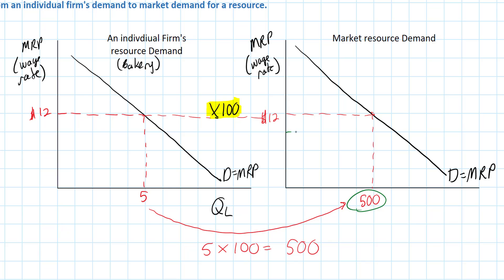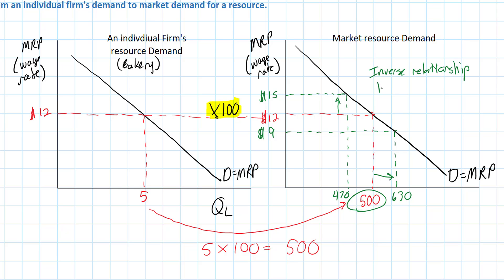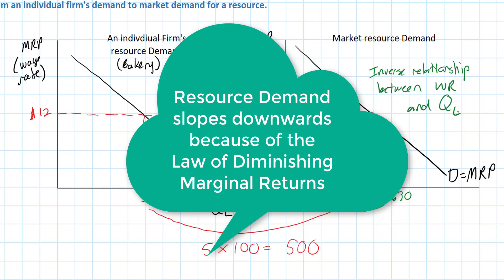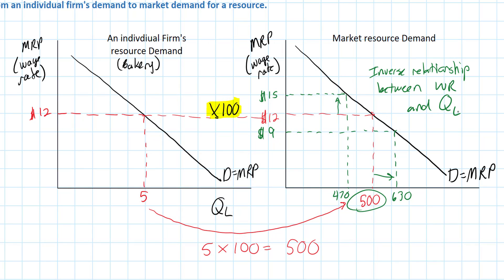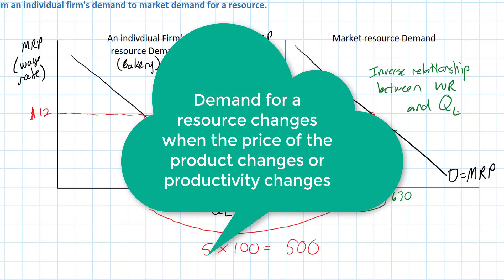What would happen if the wage rate fell? The law of demand tells us that as wage rates fall — let's say to $9 — the quantity of workers employed at bakeries would increase to around 630 workers. On the other hand, if wage rates rose to say $15, the quantity demanded of workers would fall, in this case to around 470. So we have our demand for labor which reflects the inverse relationship between the wage rate and the quantity of labor demanded. This has to do with the law of diminishing marginal returns. Because the productivity of additional workers decreases in the short run, firms are willing to pay additional workers lower wages. Only if the demand for labor were to increase would firms be willing to pay higher wages — and that occurs if the demand for the product being produced increases causing the price to rise, or if the productivity of labor increases.